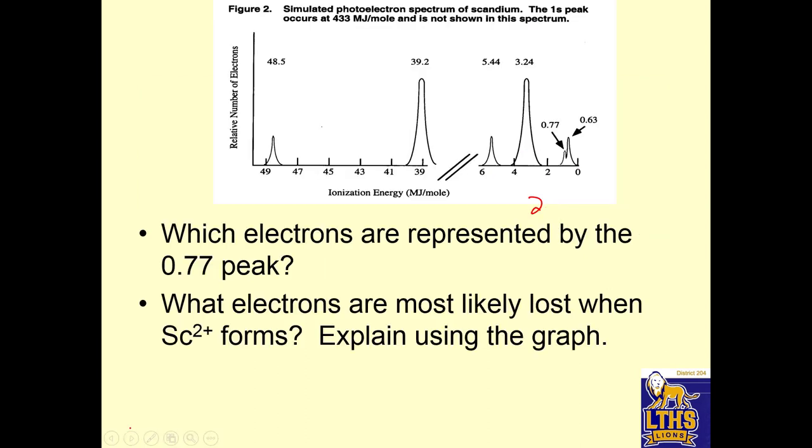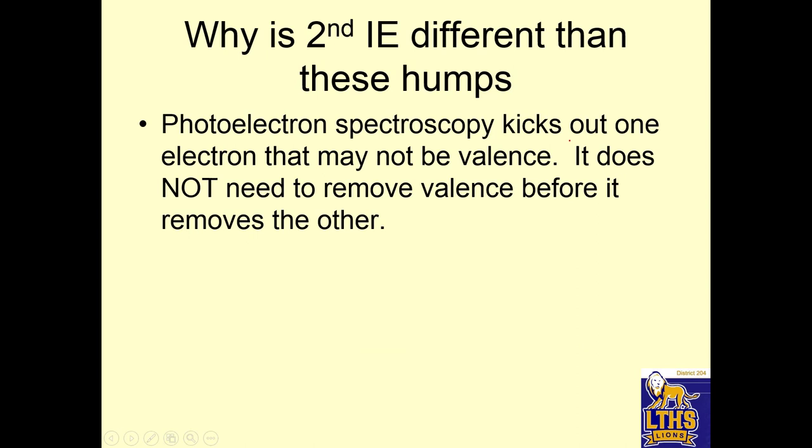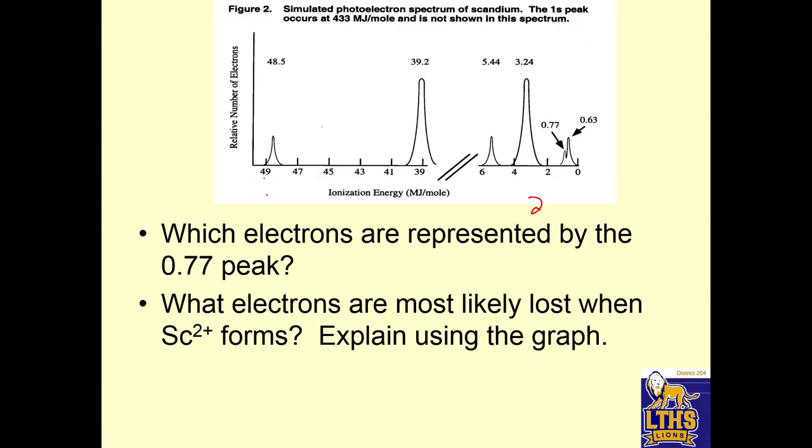So which electrons are represented by the 0.77 peak? Here's the 0.77 peak. So this is the closest to zero. So we can always label these once we learn these. 1s, that's the most energy. So if this is close to zero, the 1s peak occurs at 433. Oh, it's not shown. So that means 1s is missing. So this is 2s. This is going to be 2p. Notice it's six times as much.